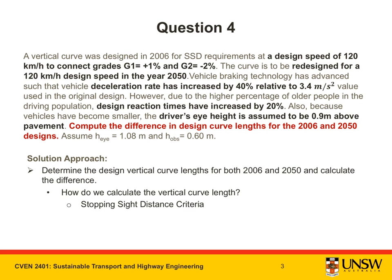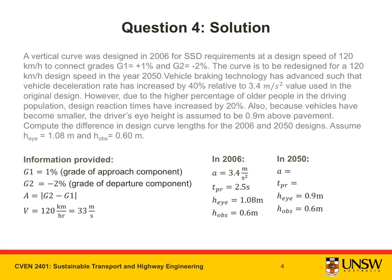The text that I underlined in the previous slide has now been shown here in bold. The black text relates to parameters and the red text relates to the questions that we must answer. So, to answer this question, we need to determine the design vertical curve length for both the 2006 and 2050 scenarios and calculate the difference. How do we calculate the vertical curve length? We use the stopping sight distance criteria. Let's go ahead and extract all the parameters from the information given to us.